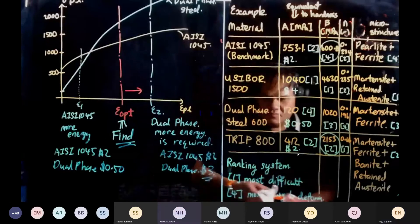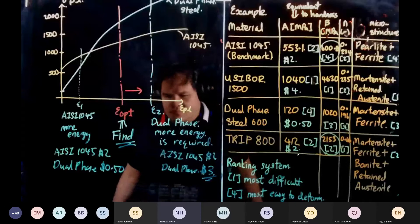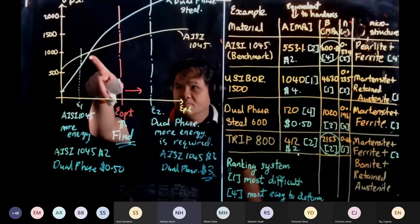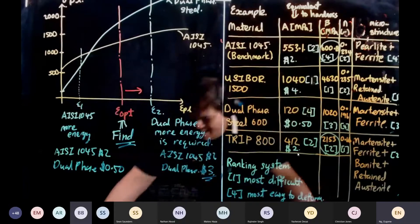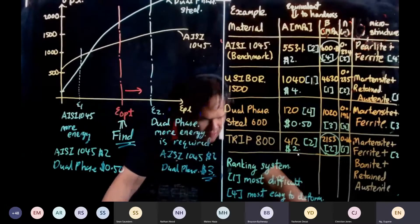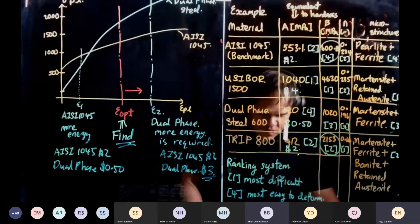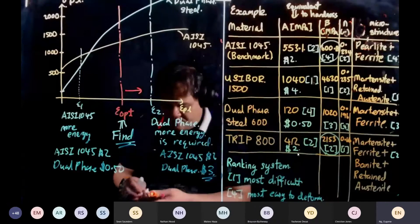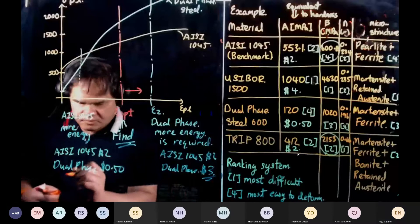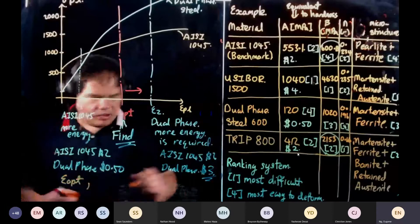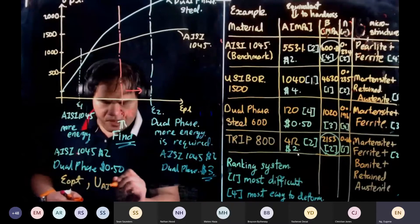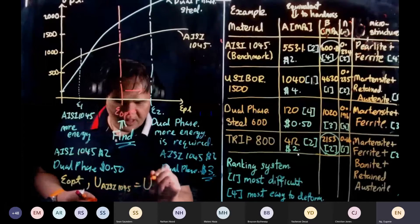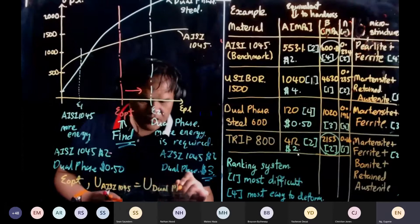How do you find epsilon optimum? The crossover point on the graph is not it. Finding the area under the curve — that's what energy is all about. Well done. To find epsilon optimum, the condition is: the energy to deform AISI 1045 must equal the energy to deform dual phase steel.